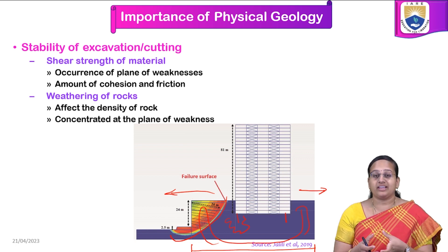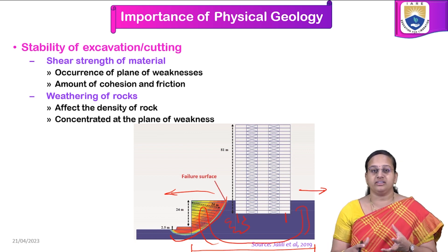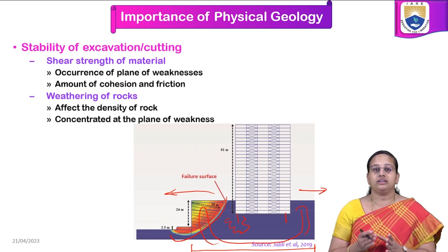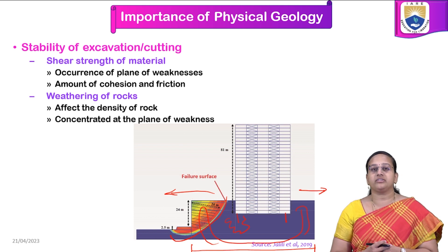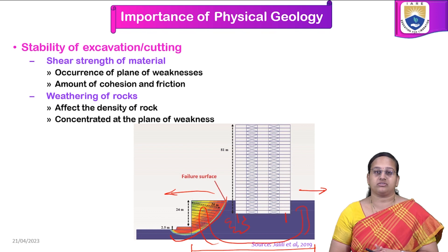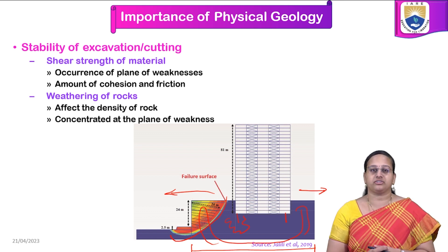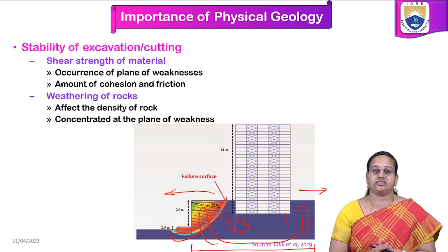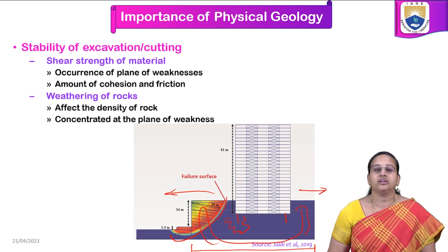The shear strength of the material gives us the occurrence of planes of weakness — where the soil is going to fail and how it is going to fail. The amount of cohesion and friction present in the soil layers also has to be estimated. Additionally, because of atmospheric conditions, rocks weather and change their properties. The effect of weathering on rock density must be estimated, as weathering concentrates at planes of weakness, which are the weak zones.